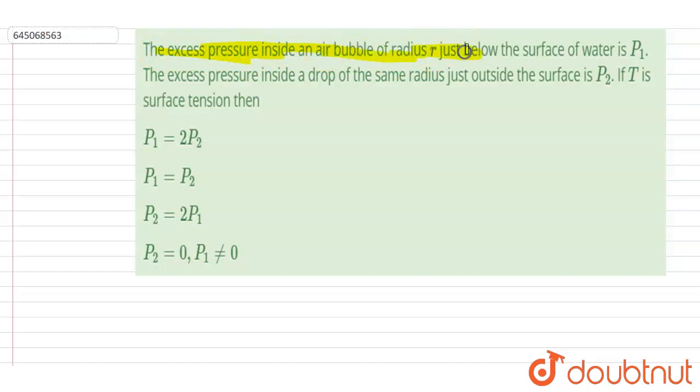air bubble of radius r just below the surface of water is P1. Excess pressure inside a drop of the same radius just outside the surface is P2.